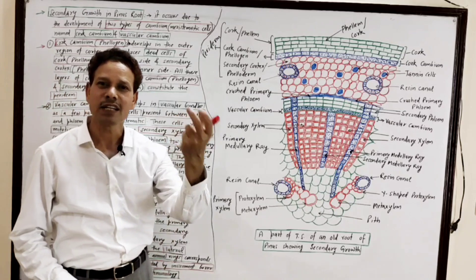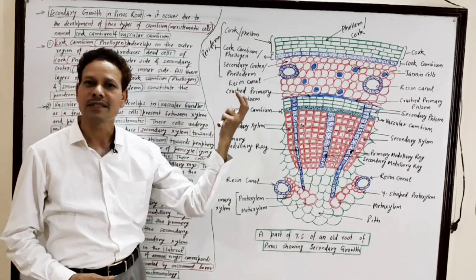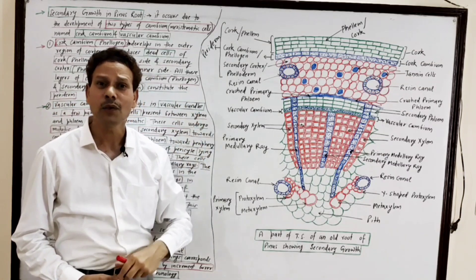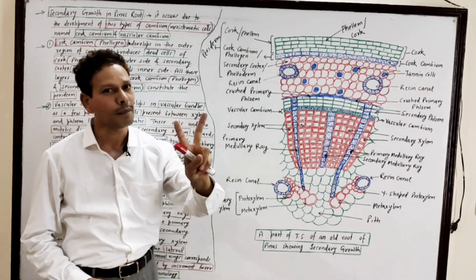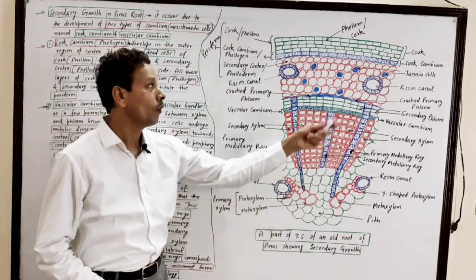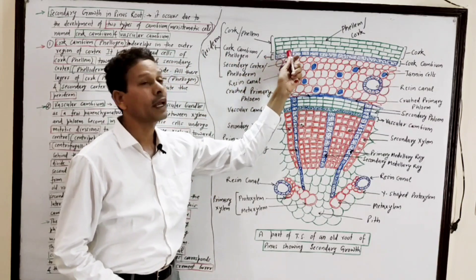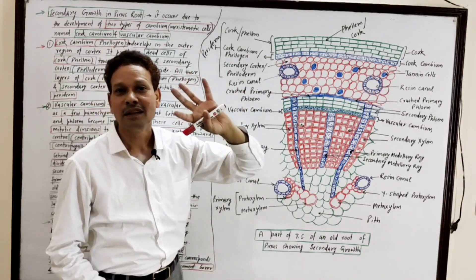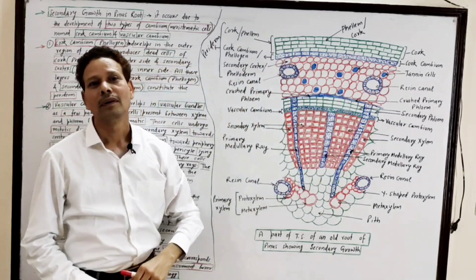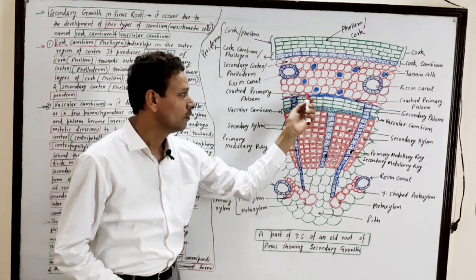In the case of Pinus root, secondary growth begins at early stages of the young root. This secondary growth occurs due to the development of two types of cambium meristematic cells. One type of cambium develops in the cortex — it is cork cambium, or phellogen. The second type of cambium meristematic tissue develops in the vascular tissue — it is vascular cambium.